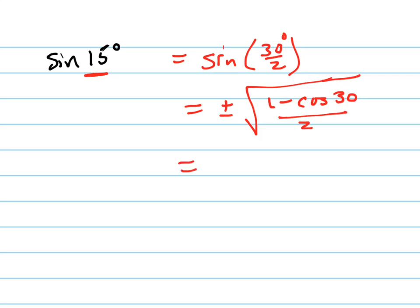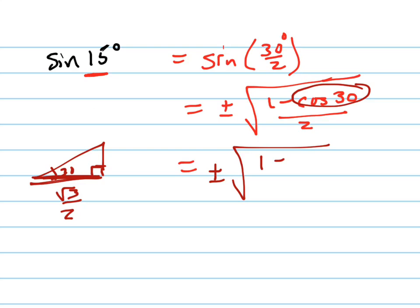Now I'm going to simplify this by substituting in using my unit circle. The cosine of 30, if you remember, that was this angle right here, 30. The cosine is the x-coordinate right here, which is root 3 over 2, and it's positive. So it's plus or minus root of 1 minus root 3 over 2, all over 2.